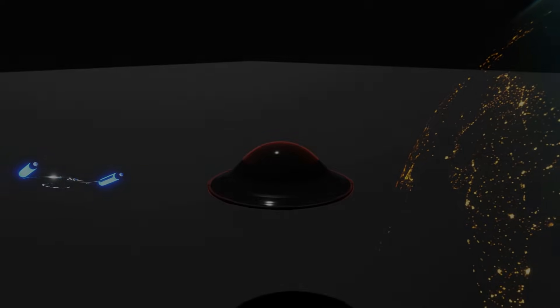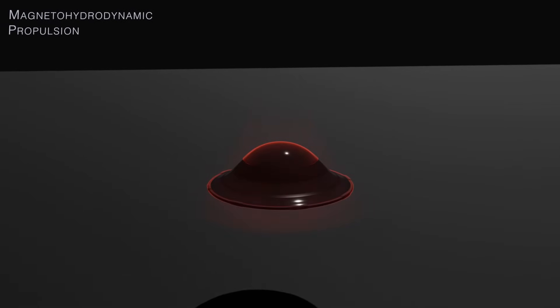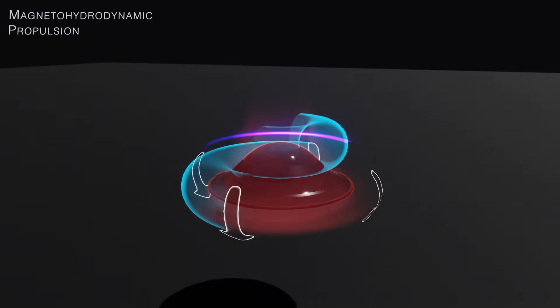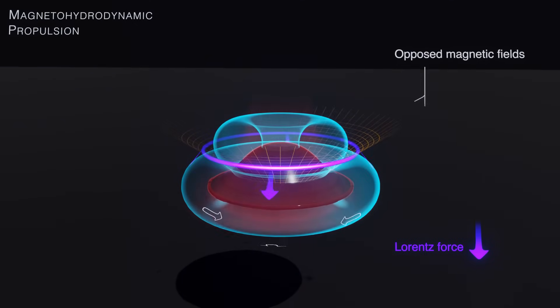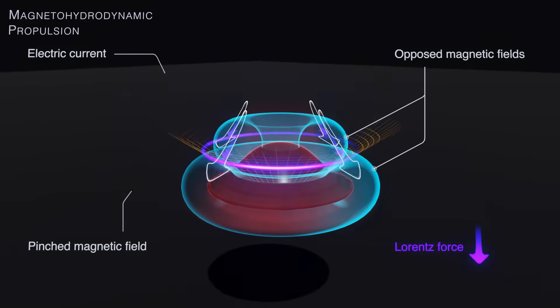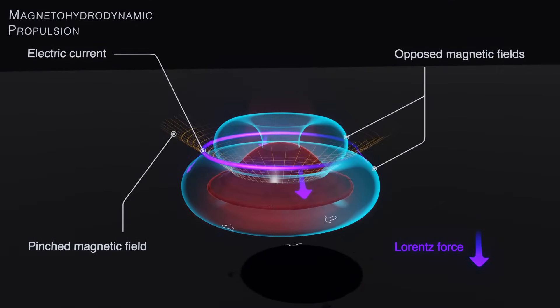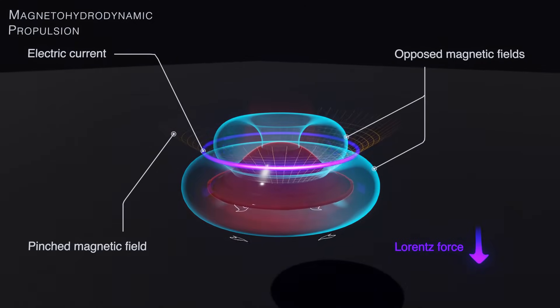In the case of MHD propulsion, oppositely charged electrodes are used to create the needed electric current through the fluid. A magnetic field is then passed at a right angle to it, giving rise to the Lorentz Force, accelerating or decelerating the fluid.